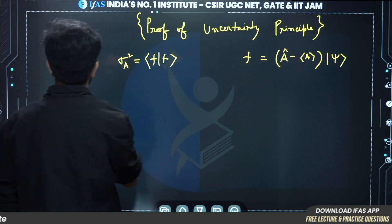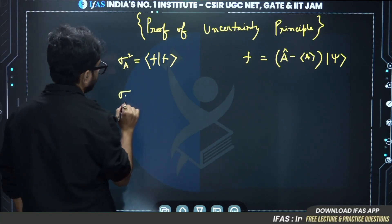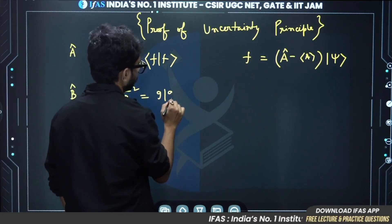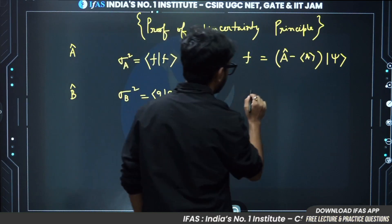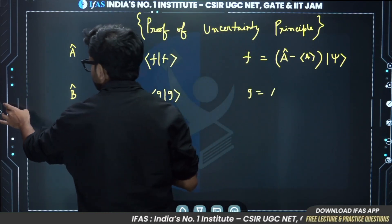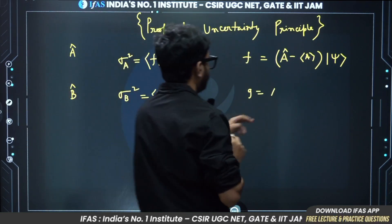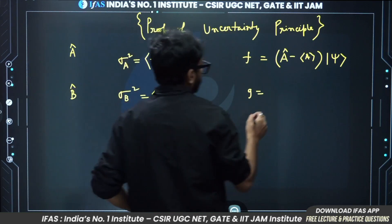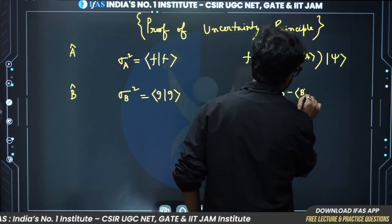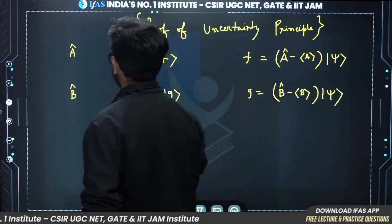Similarly, if there is another operator B, then sigma_B squared equals ⟨g|g⟩, where g equals (B̂ minus expectation value of B) operating on psi.